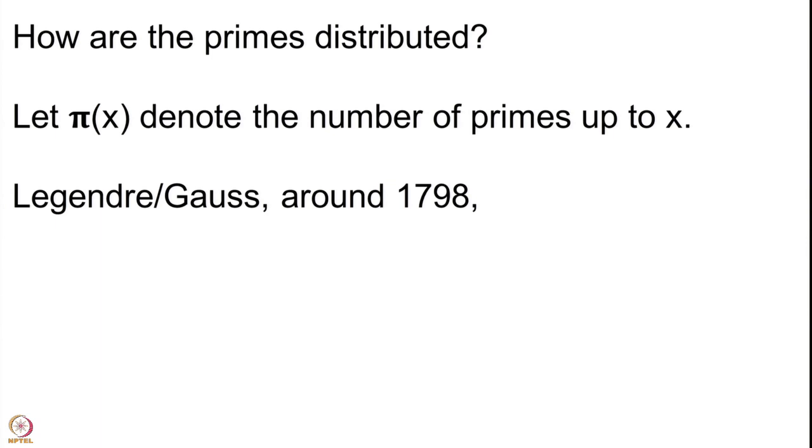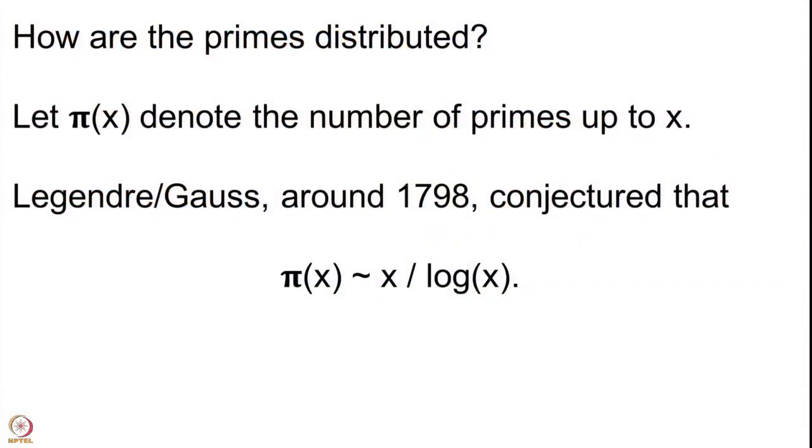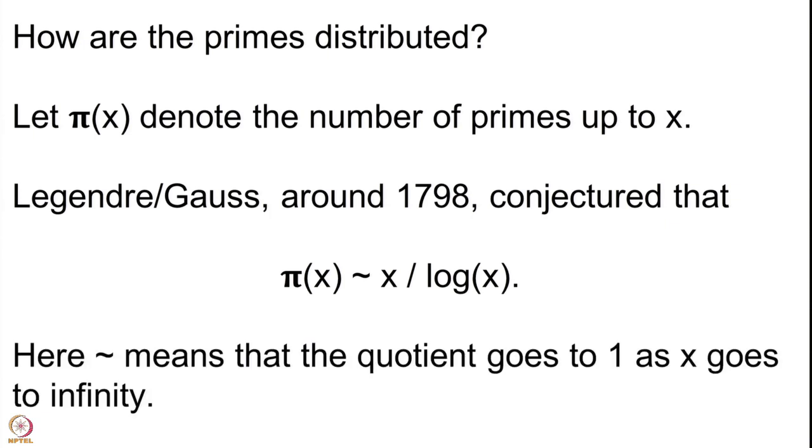This is how one starts thinking about it. These two mathematicians, Legendre and Gauss, in 1798 — the end of the 18th century — thought about it independently and both conjectured a formula. They both conjectured that π(x) is asymptotic to x / log(x). This equivalence means that the quotient of these two functions goes to 1 as x goes to infinity — so we divide π(x) by x/log(x) and that quotient goes to 1.